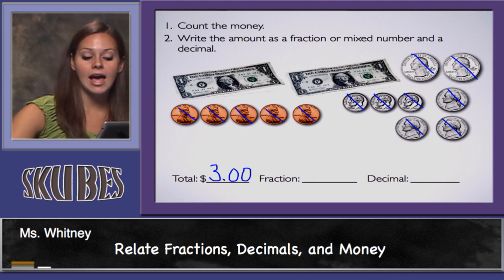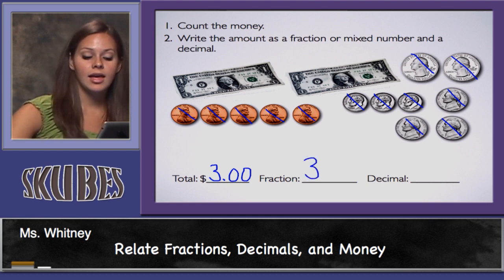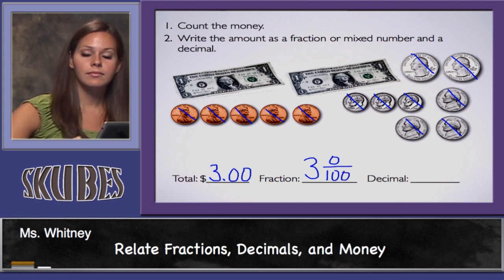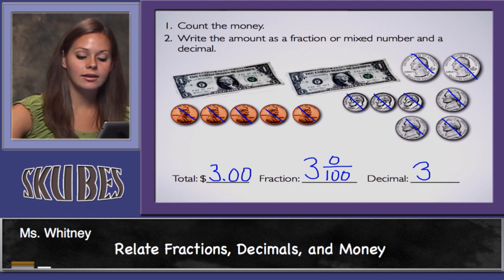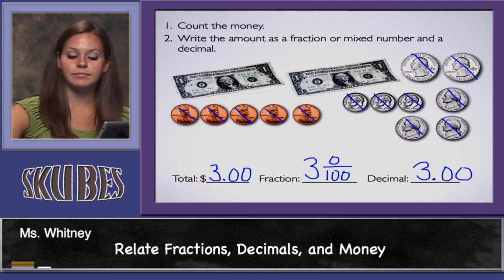To write this as a fraction, I can write three wholes and zero hundredths. As a decimal, I write three and zero hundredths.